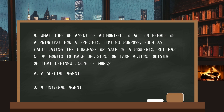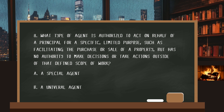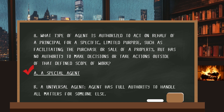Number eight. What type of agent is authorized to act on behalf of a principal for a specific, limited purpose — such as facilitating the purchase or sale of a property — but has no authority to make decisions or take actions outside of that defined scope of work? The answer is A: a special agent. A universal agent has full authority to handle all matters for someone else.